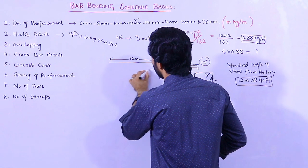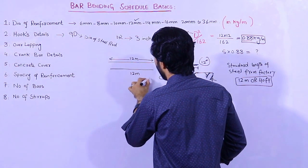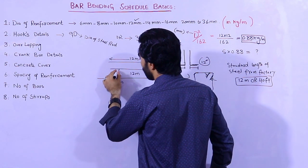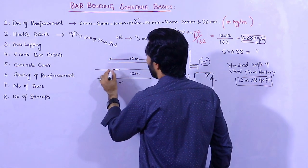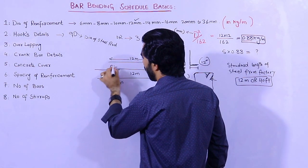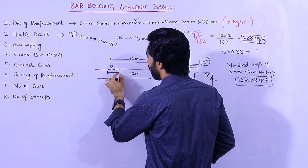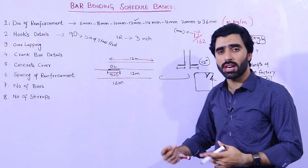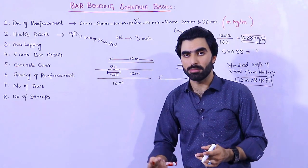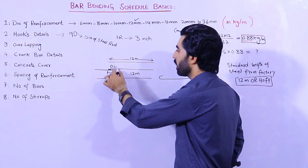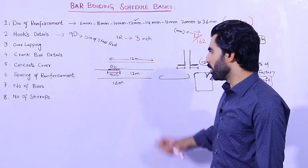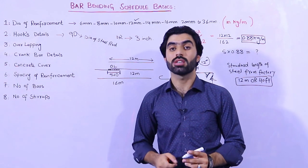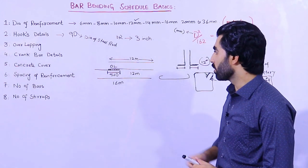For example, this is one steel rod of 12 meters and I need 16 meters, so here I will overlap another steel rod. This is called overlapping (OL). The lapping should not be less than 50D, where D is the diameter of the steel rod in millimeters — whether it is 12mm, 16mm, 20mm, or any diameter. I have discussed the best place to provide lapping in beam, column, and slab in other videos — the link is in the description.